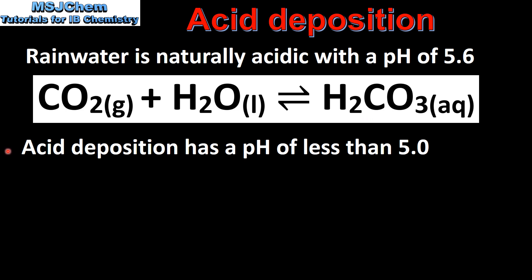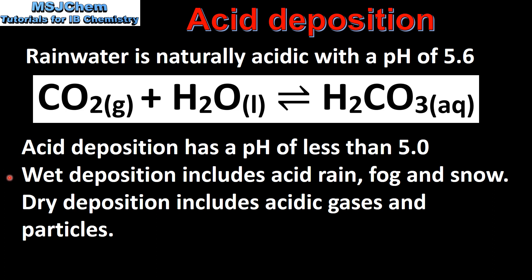Acid deposition has a pH of less than 5.0. There are two types of acid deposition: wet deposition, which includes acid rain, fog, and snow, and dry deposition, which includes acidic gases and particles. In this video we'll focus on wet deposition.